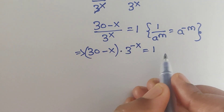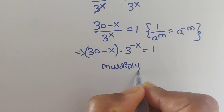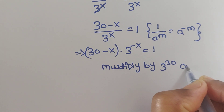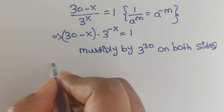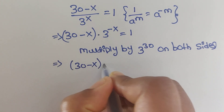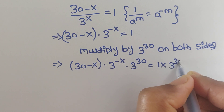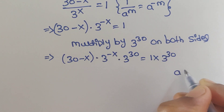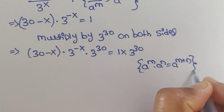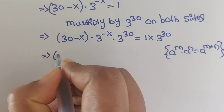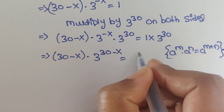To make 30 minus x workable, multiply both sides by 3 to the power of 30. So now we have (30 minus x) times 3^(minus x) times 3^30 equals 3^30. Using the formula a^m times a^n equals a^(m plus n), we can write (30 minus x) times 3^(30 minus x) equals 3^30.